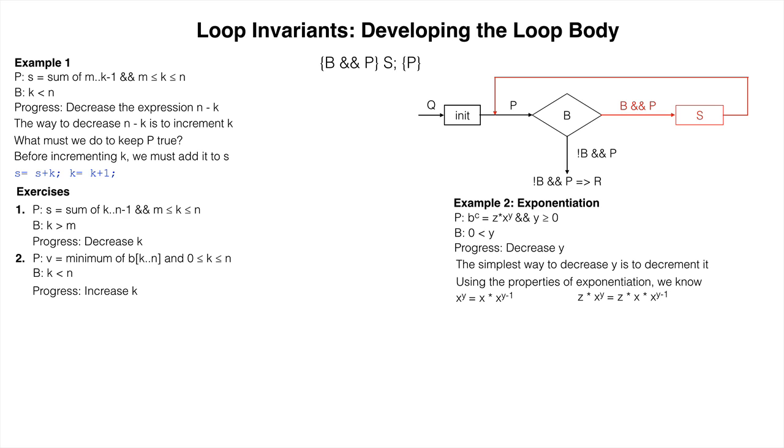Multiplying both sides of the equation by Z makes it look similar to our invariant. To maintain the invariant, we need Z to hold the value of itself multiplied by X. This yields the repetend: Z becomes Z times X and Y becomes Y minus one.